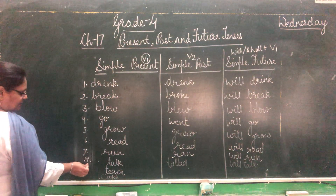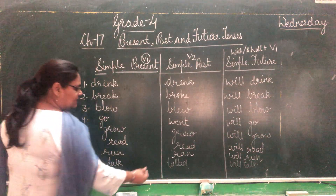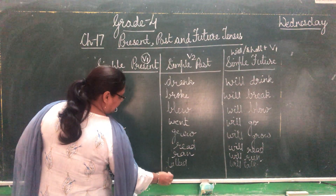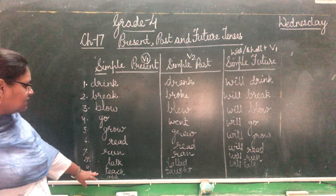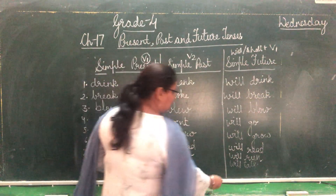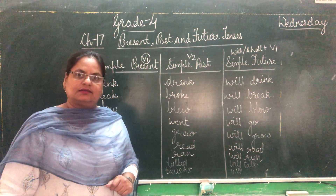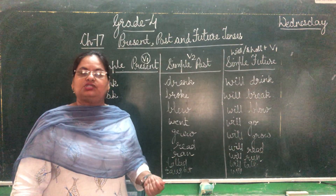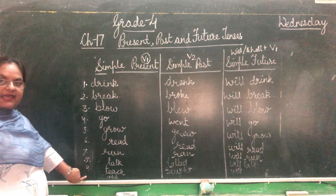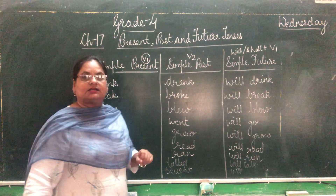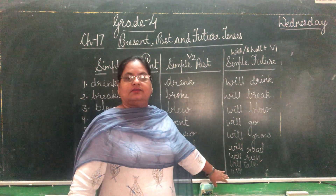Next is teach — T-E-A-C-H. For past tense we write taught — T-A-U-G-H-T. Future: will teach. Then bring, brought, will bring. Buy, bought — B-O-U-G-H-T — will buy. And the last is catch — past tense is caught — C-A-U-G-H-T — and simple future is will catch.